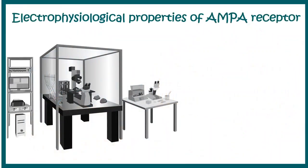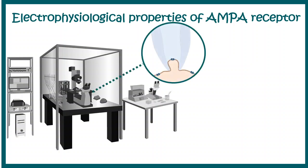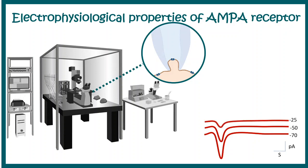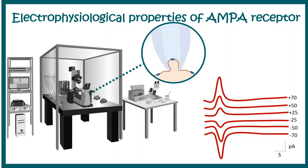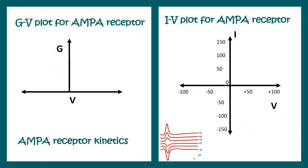In order to understand the kinetics of these receptors, we can look at their physiological properties by electrophysiological recordings. In a patch clamp setting, in whole cell mode using voltage clamp, we can stabilize the voltage at a particular defined voltage and look at the current. If we hold AMPA receptors at minus 70 millivolts, we would see an inward current, and the current differs with voltage. As voltage increases towards the more positive side, the direction of the current is reversed. Another way to understand this is to plot an IV plot or current versus voltage plot, or a GV plot or conductance versus voltage plot.